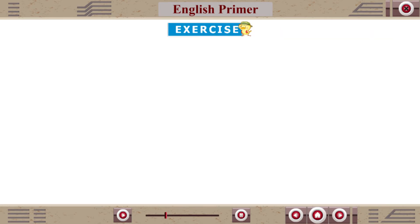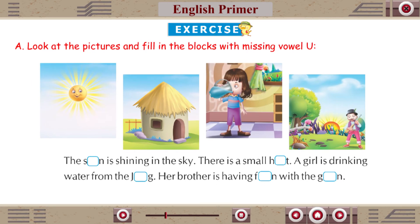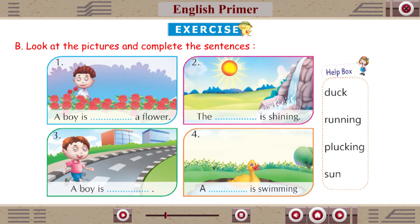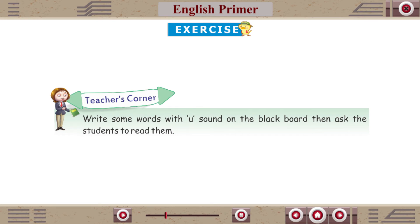Exercise A: Look at the pictures and fill in the blocks with missing vowels. Exercise B: See the pictures and complete the sentences. Teacher's Corner: Write some words with U sound on the blackboard, then ask the students to read them.